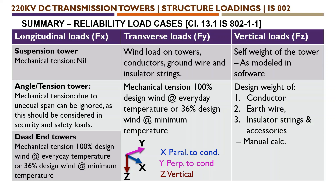There are 3-dimensional forces we need to calculate. The first is longitudinal loads. For a suspension tower we should not consider any mechanical tension. For an angle or tension tower, whether to consider mechanical tension depends on the case, but for unusual span we can generally ignore mechanical tension, as it is already considered under security or safety loads under a broken wire condition.